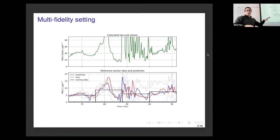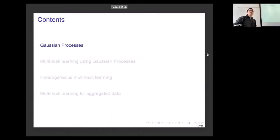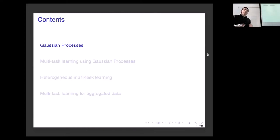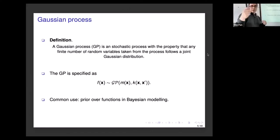For building these models, I'm going to use the machinery of Gaussian processes. Gaussian processes are basically generalizations of multivariate Gaussian distributions — multivariate Gaussian distributions apply to finite vectors, whereas Gaussian processes apply to functions. Formally, a Gaussian process is a stochastic process such that if I take a finite number of random variables from that process, they follow a multivariate Gaussian distribution.